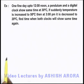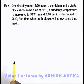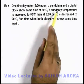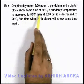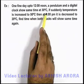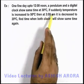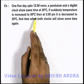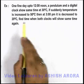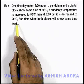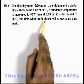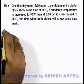Let's discuss one more example based on a similar concept. One fine day, up to twelve noon, a pendulum and a digital clock show the same time at thirty degree centigrade. If suddenly temperature is increased to fifty degree centigrade, then at three pm it is decreased to twenty degree centigrade. We are required to find the time when both clocks will show the same time again.